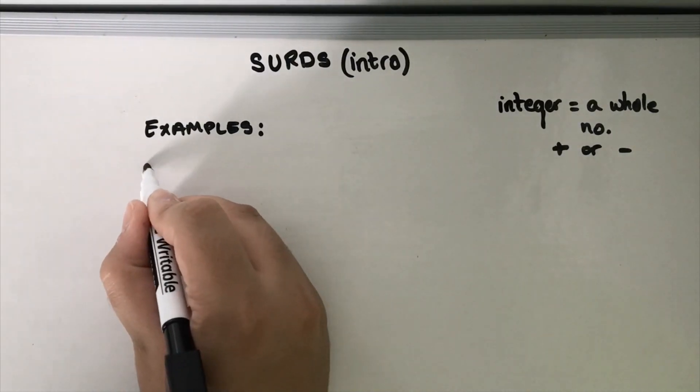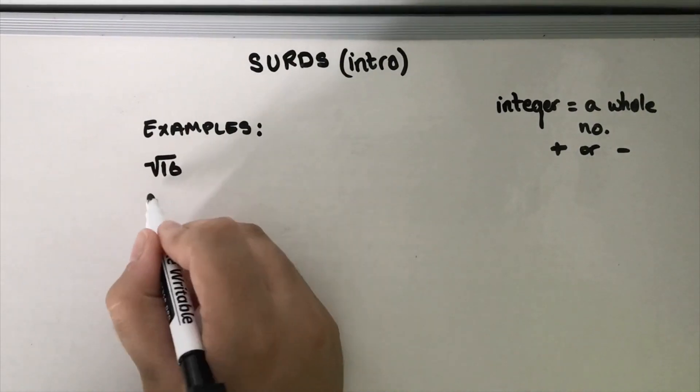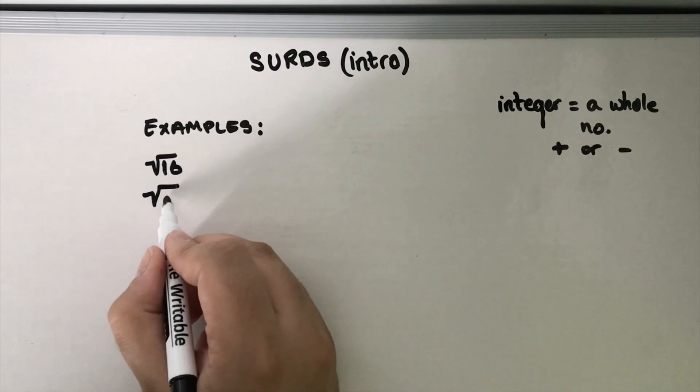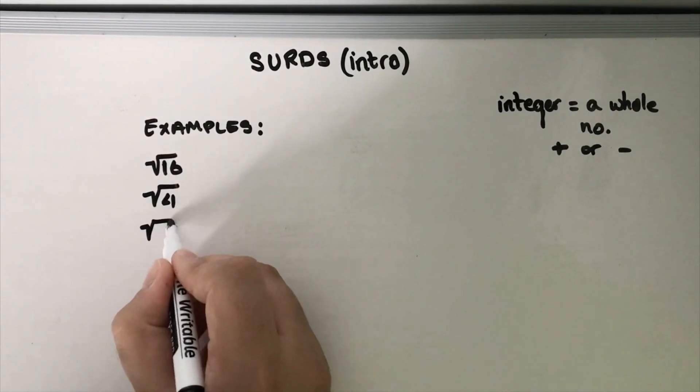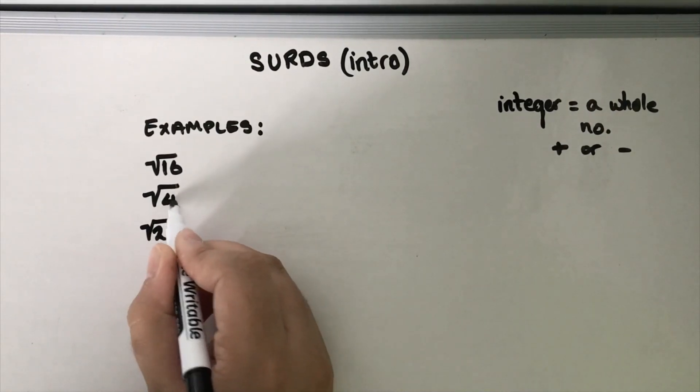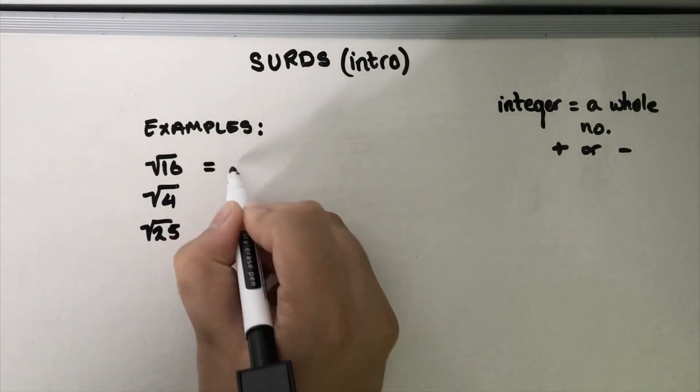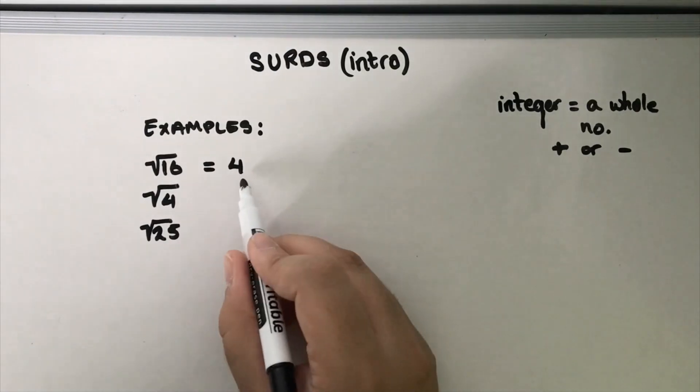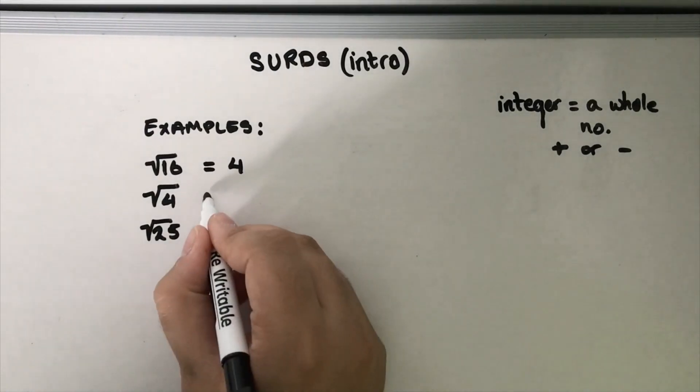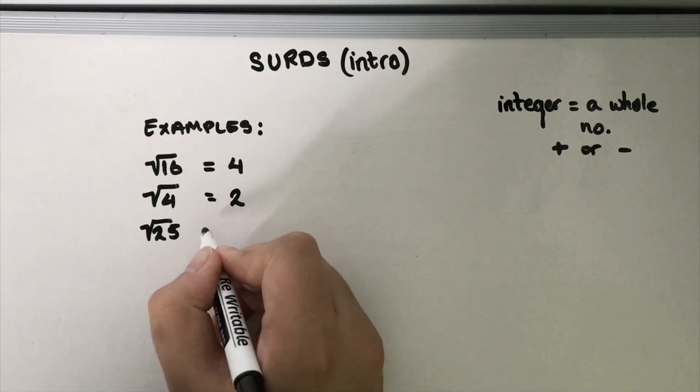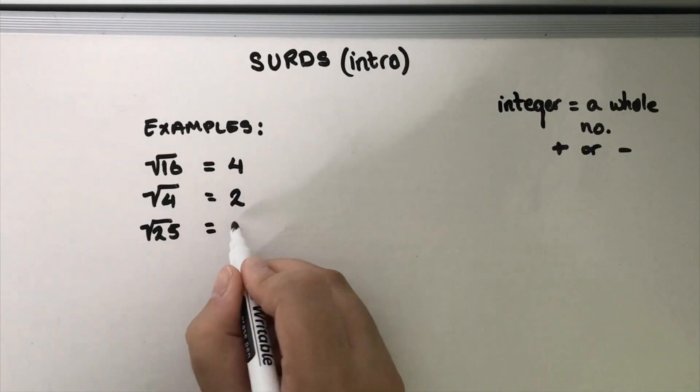So let's do this for example: root 16, root 4, and root 25. Now we know that these actually aren't surds, and this is because root 16 is equal to 4 which is an integer. Root 4 is equal to 2 and root 25 is equal to 5.